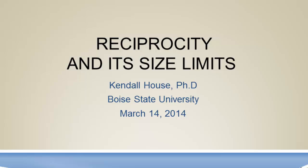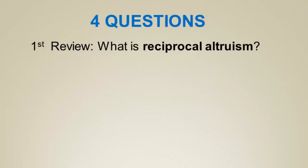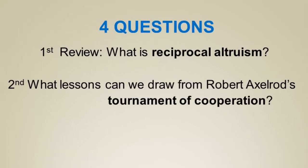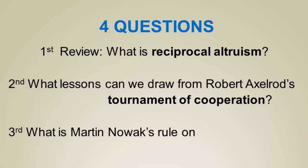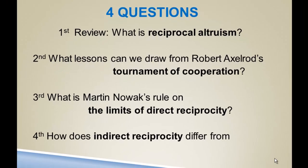Hello and welcome back. This presentation is called Reciprocity and Its Size Limits. We're going to try to answer four questions: first, what is reciprocal altruism? Second, what lessons can we draw from Robert Axelrod's Tournament of Cooperation? Third, what is Martin Nowak's rule on the limits of direct reciprocity? And fourth, how does indirect reciprocity differ from direct reciprocity?